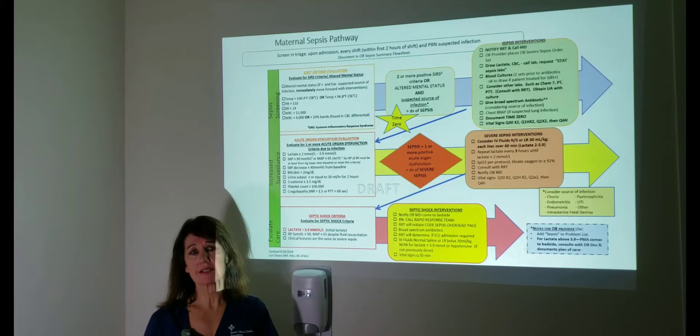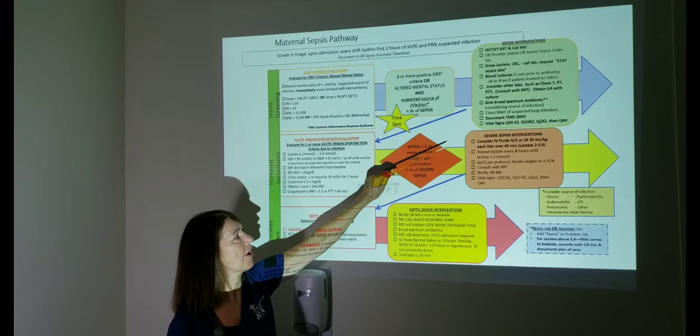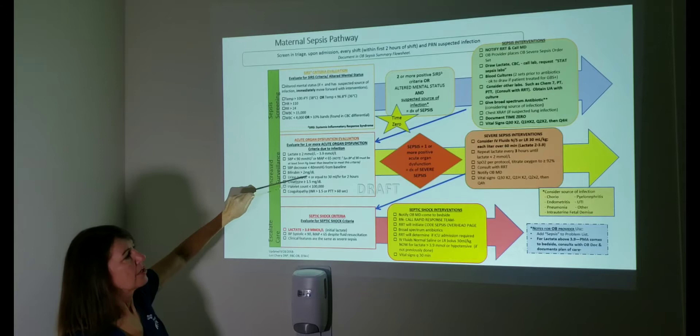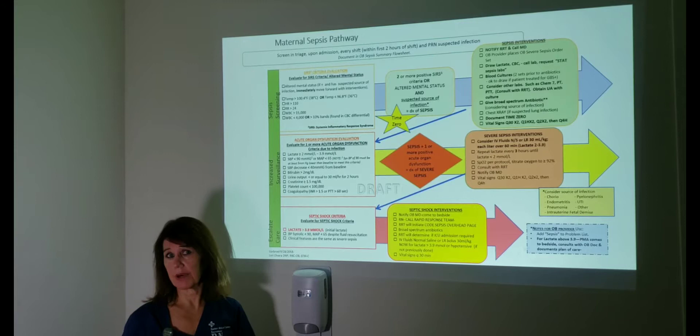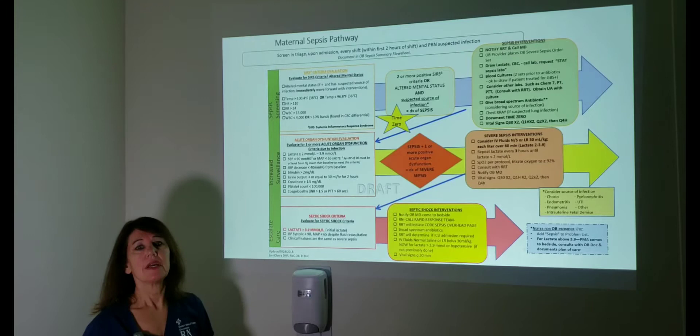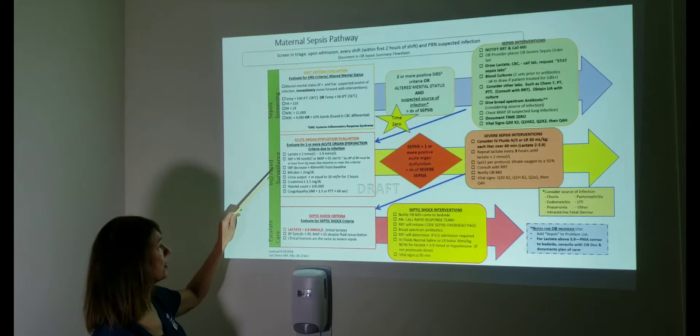So now going on to the pathway, those are our interventions that we just talked about. Going on the pathway here is organ dysfunction. We're going to be reviewing our labs. Our labs are going to come back and they're going to tell us, is there any coagulopathy? Is the bilirubin over two? Is the lactate greater than two? Any of those labs will indicate to us that there's organ dysfunction.